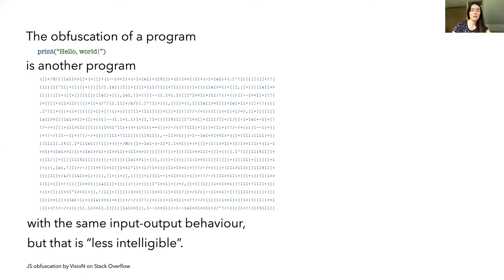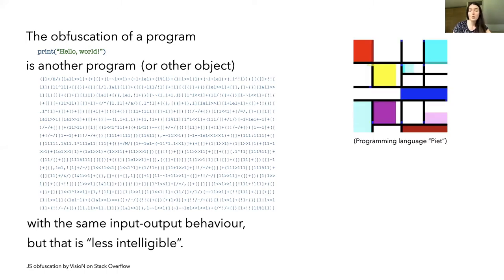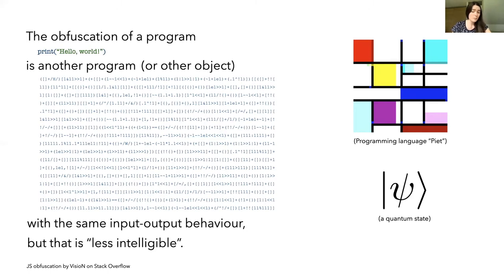One observation that will be crucial for today's talk is that the obfuscation of a program does not necessarily need to be a program itself. There is no fundamental reason why it couldn't be, say, an image together with some public instructions on how to interpret that image — how to run the program that's encoded by that image. Or why couldn't an obfuscation be a quantum state that you can interact with in order to execute your program. So when I say obfuscation of a program or of a circuit, I really mean it to be any possible object.